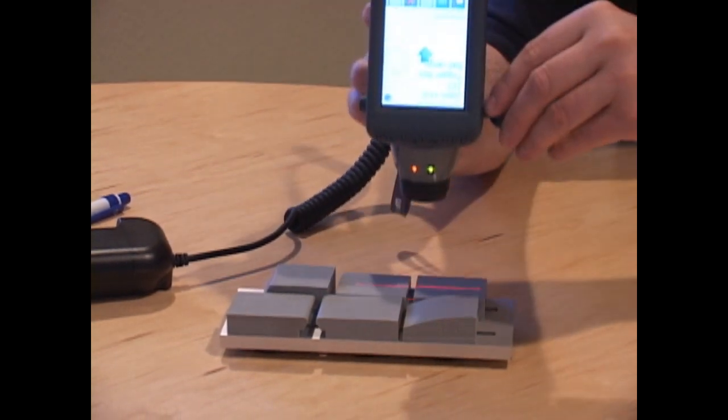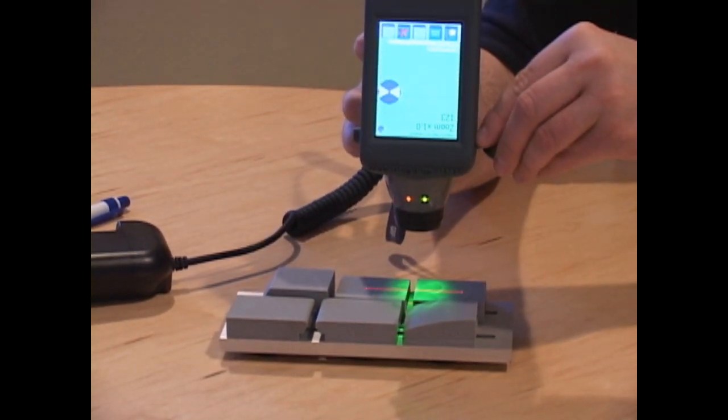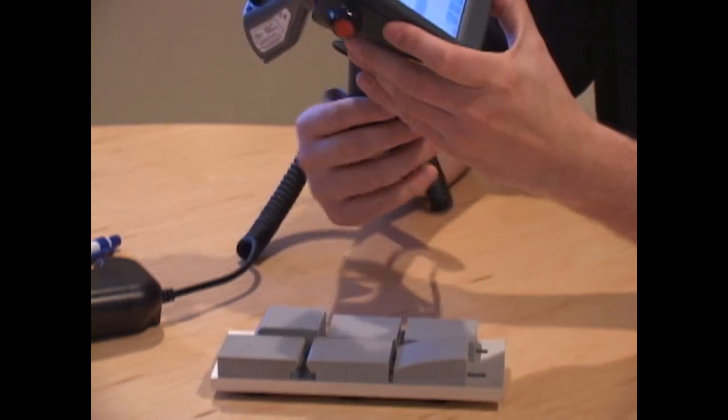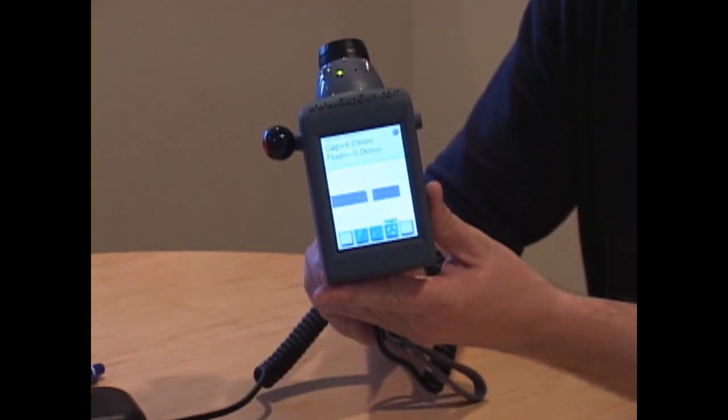Some green lights will tell me when I'm in a good position so I hold in place. It takes a measurement and then reports back the dimensions to me.